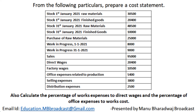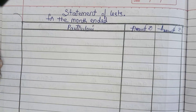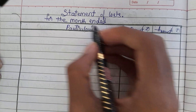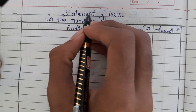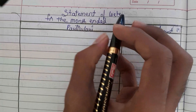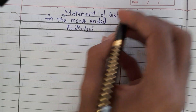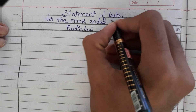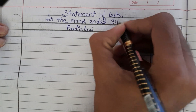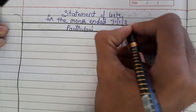So this is our question. Let us see how to solve this problem. Now this is the format — Statement of Costs for the month ended 31st January 2021.